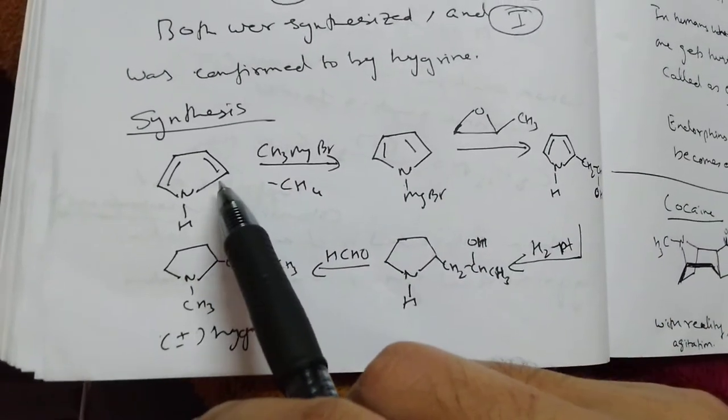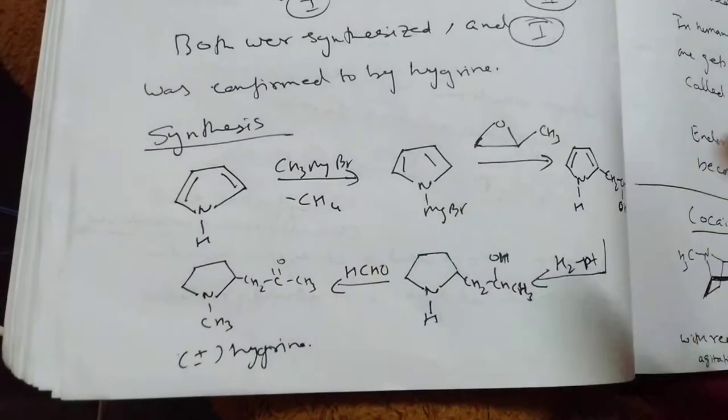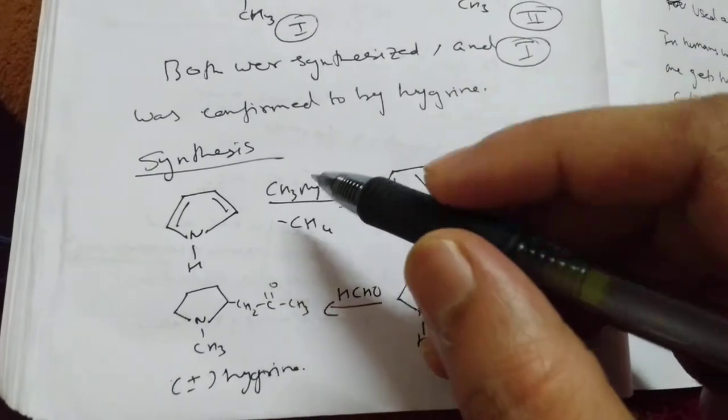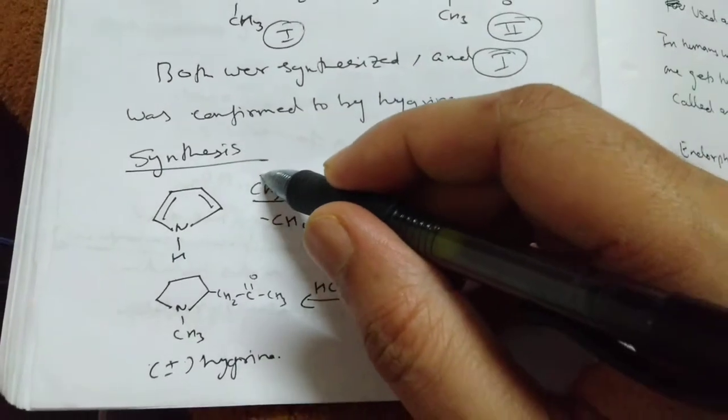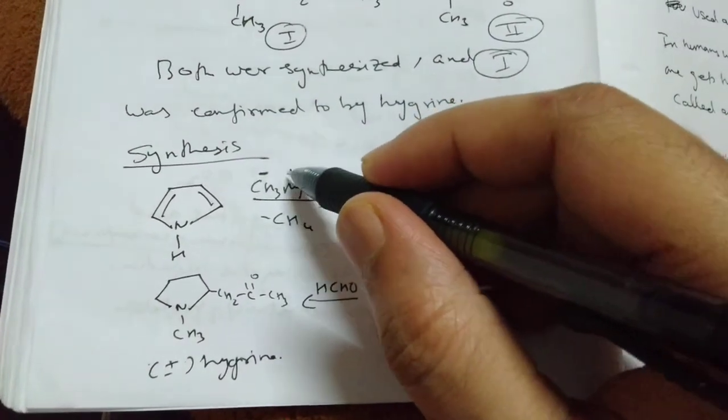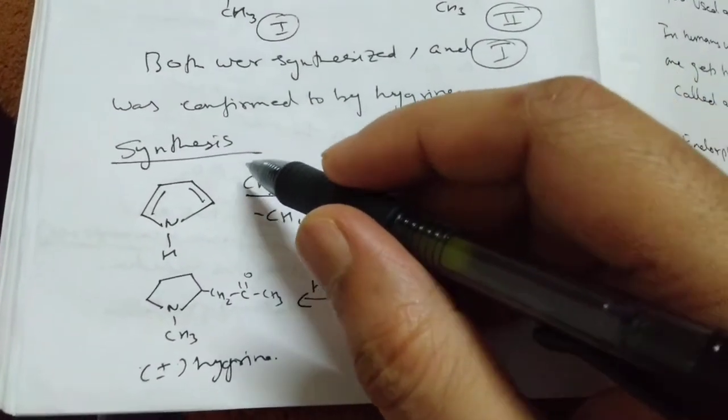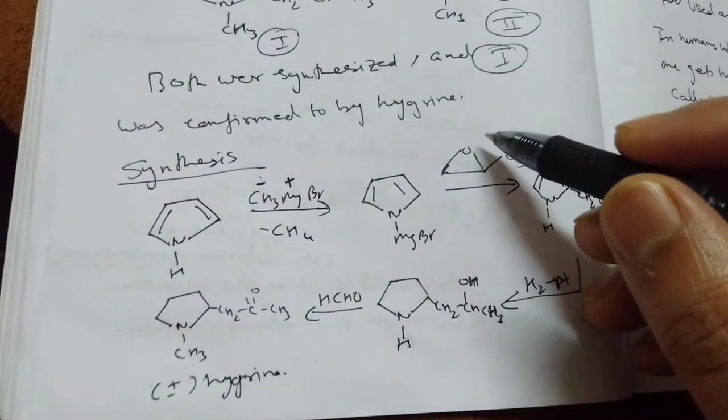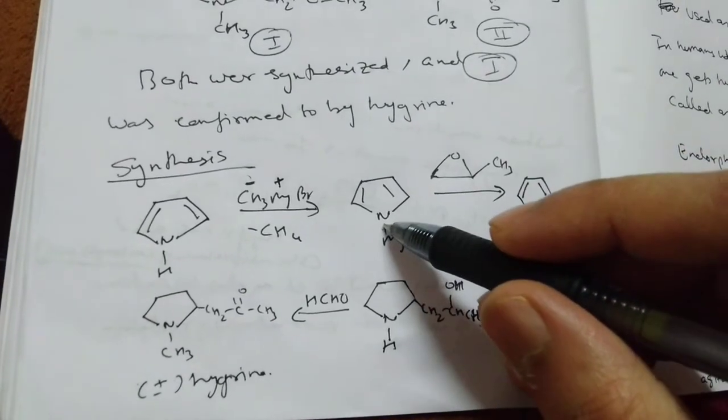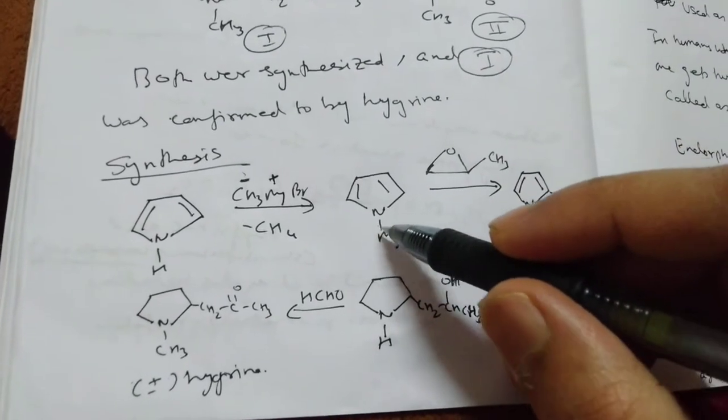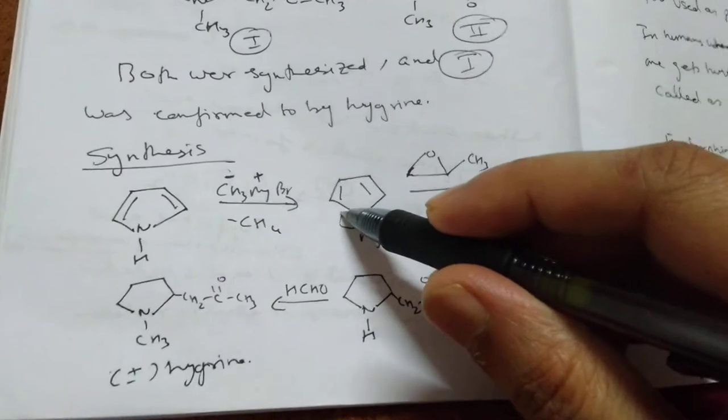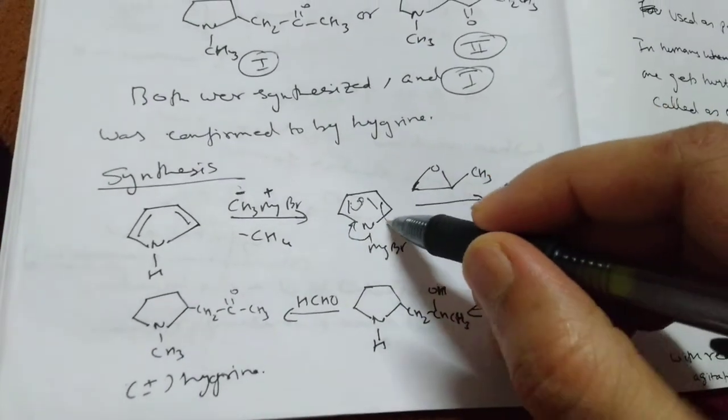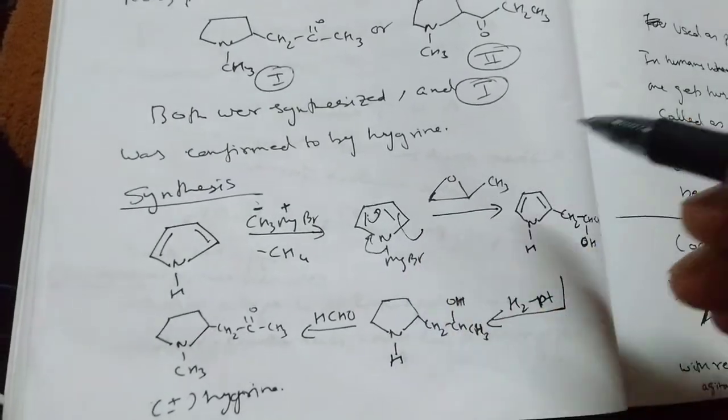They did Grignard reaction with CH3MgBr, which is a very powerful nucleophile and also very powerful base. This takes away proton and forms NMgBr. Then they reacted with this part, so the negative charge N-Mg+ will go here, this will come here, and this will come and attack.